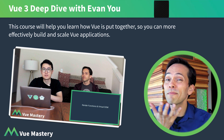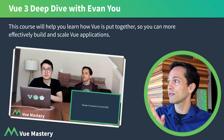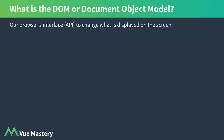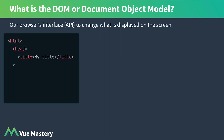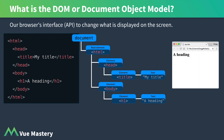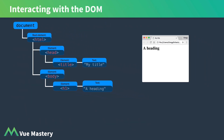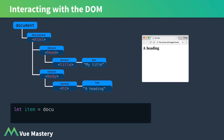We'll start with the basics, and if this seems too simple, just stay tuned — we'll get to the more advanced stuff in a second. So first of all, what is the DOM, or Document Object Model? This is our browser's interface to change what is displayed on the screen. So if we load this HTML into the browser, our browser creates these nodes which it uses to display our web page. This HTML maps to a series of DOM nodes that we can then manipulate using JavaScript. To interact with the DOM, we can write JavaScript that looks like this.